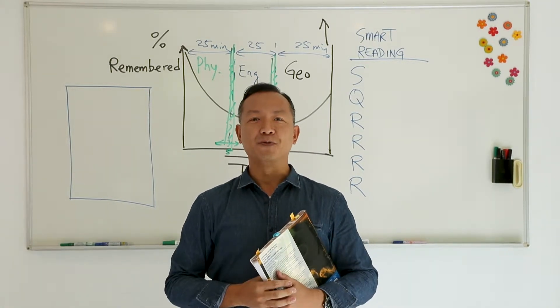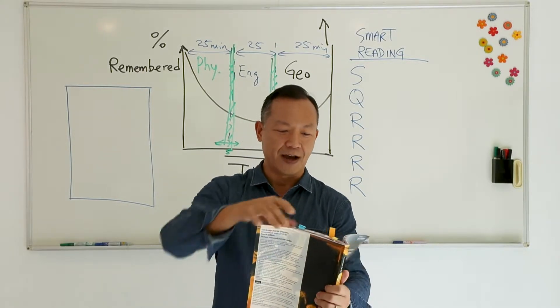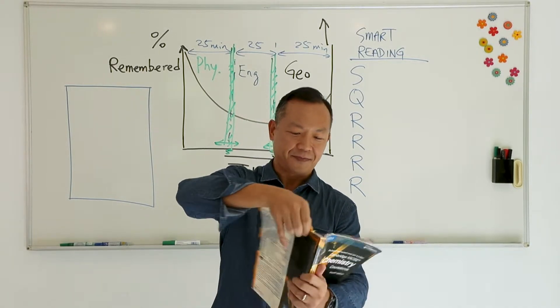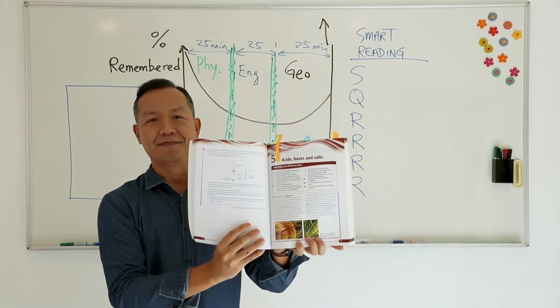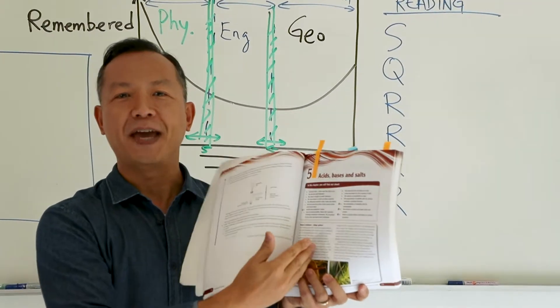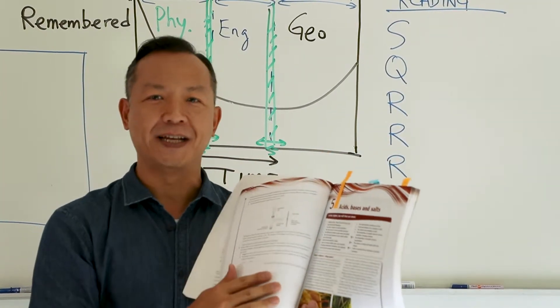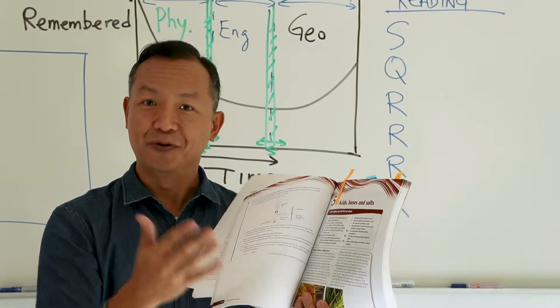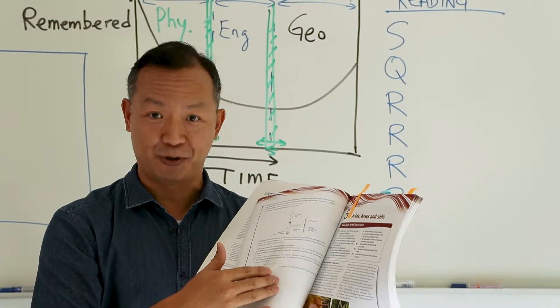Most students would just open the textbook, let's say Chapter 5, and they would just start reading top down, page by page. Is that how you have been reading? If that is the case today, consider another option.